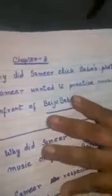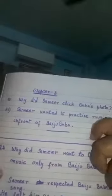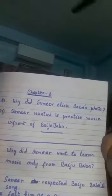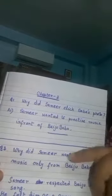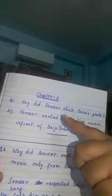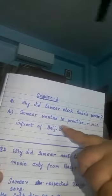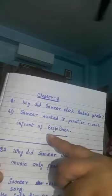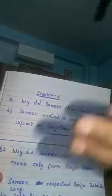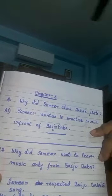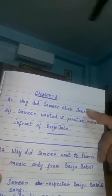Now come to chapter 3. Question number one: Why did Samir click Baidu Baba's photo? Samir wanted to practice music in front of Baidu Baba because he respected him as a guru. You can write that he respected him as a guru or not — that is up to you. You will get this question from the book.